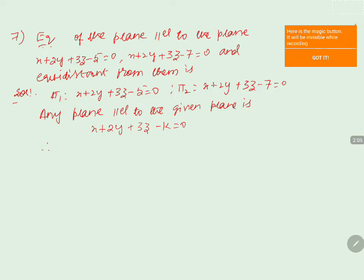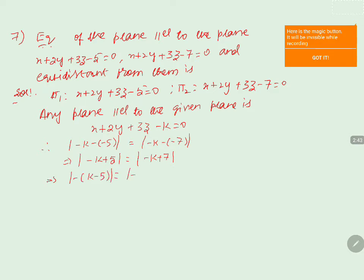Therefore, we can write the equidistant condition as: |(-k) - (-5)| = |(-k) - (-7)|, which simplifies to |-k + 5| = |-k + 7|, or |-(k - 5)| = |-(k - 7)|.